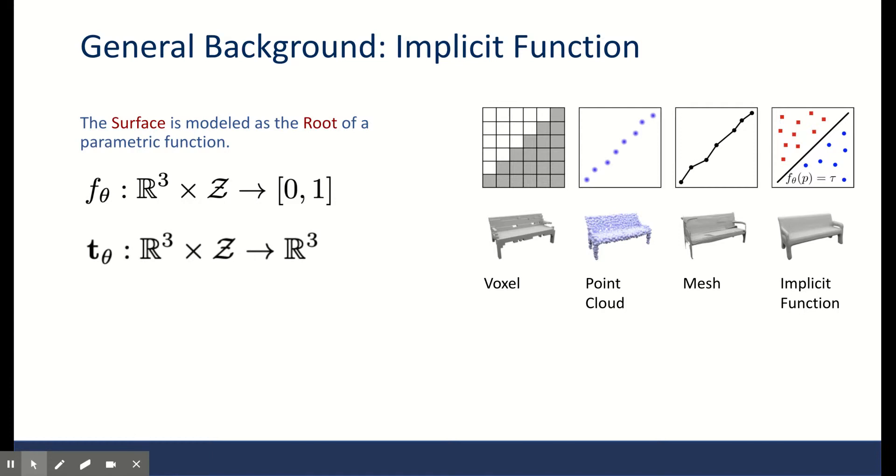In order to understand the contributions of this paper better, let's take a look at what an implicit function is. An implicit function is a function from a 3D coordinate R3 and the conditioning representation denoted by Z to a scalar between 0 and 1. The function F is parameterized by a set of variables like theta. The output is to indicate the occupancy probability. The goal is to learn these parameters theta.